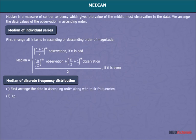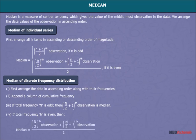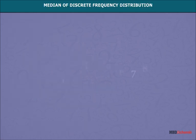For median of discrete frequency distribution, the steps are: first arrange the data in ascending order along with their frequencies and append a column of cumulative frequency. If total frequency n is odd, then the (n/2 + 1)th observation is the median. If total frequency n is even, then median is equal to the average of the (n/2)th and (n/2 + 1)th observations.